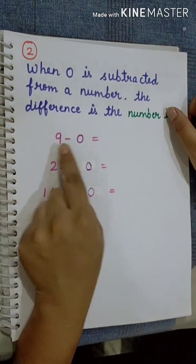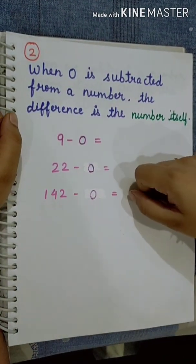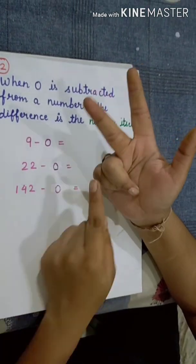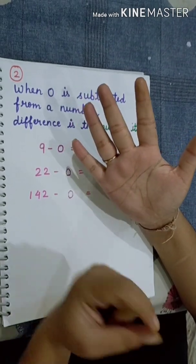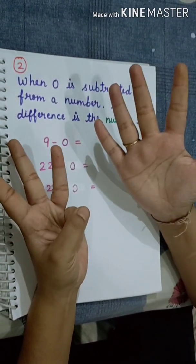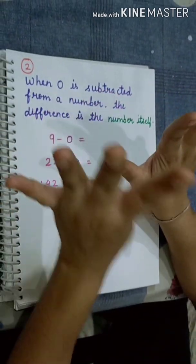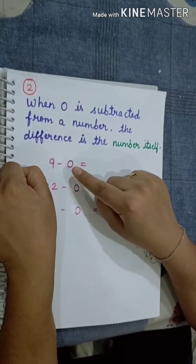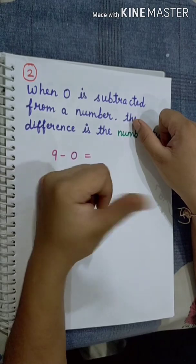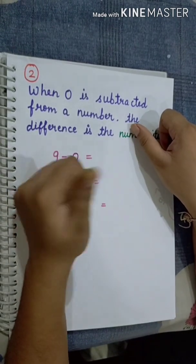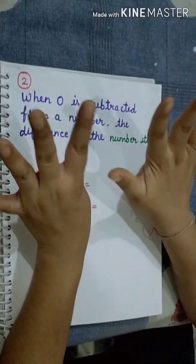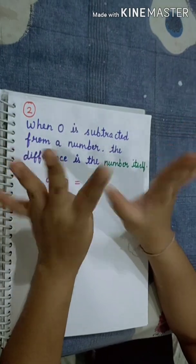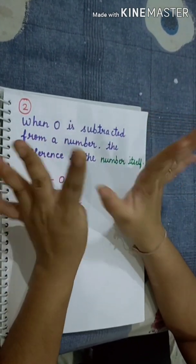Let's do 9 minus 0. Let's count 9 on our fingers: 1, 2, 3, 4, 5, 6, 7, 8, 9. Number 9 is on our fingers. So we have to subtract 0. What is 0? 0 means nothing. So number 9 is on our fingers and we have to subtract 0 — means nothing. That means we don't need to hide any finger.